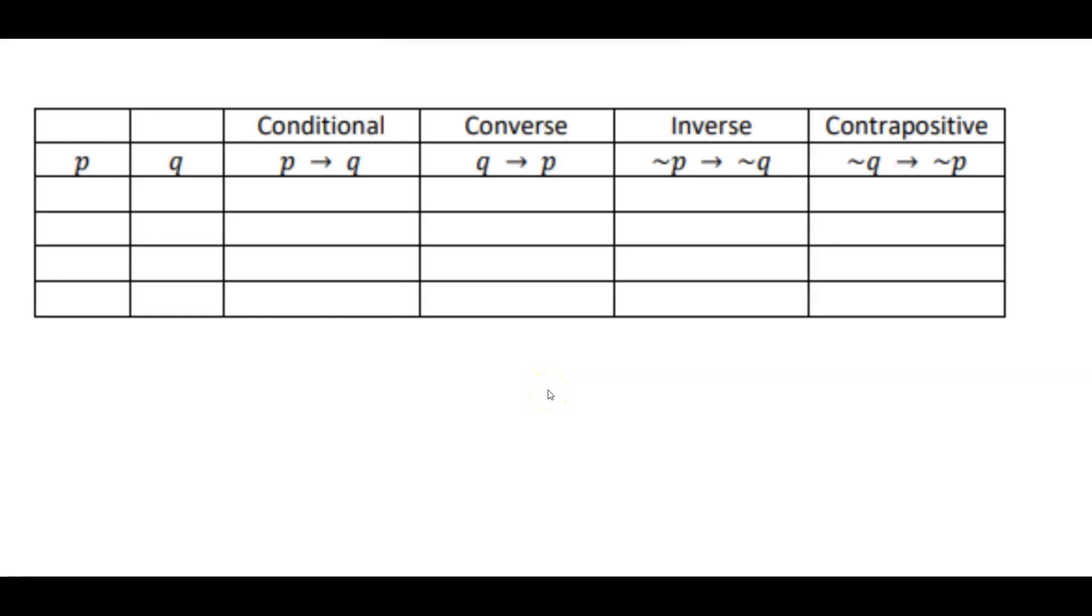One thing truth tables can be used for is to determine the equivalency of certain statements. For example, the conditional statement P implies Q, the converse would be Q implies P, the inverse statement would be not P implies not Q, and the contrapositive statement would be not Q implies not P.